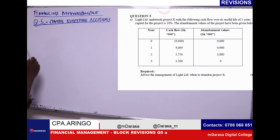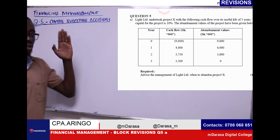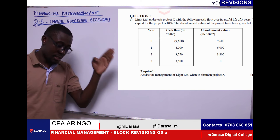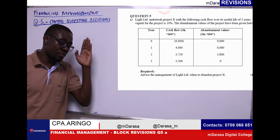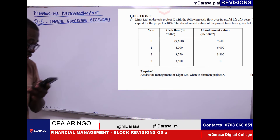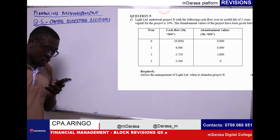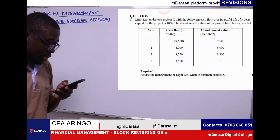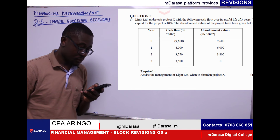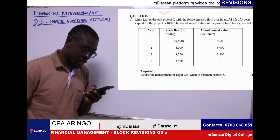In today's session, we are looking at question number five A, which is covering the concept of capital budgeting decisions. The examiner tells us that Light Limited undertook Project X with the following cash flows over its life of three years. The cost of capital for the project is 10%, and the abandonment values of the project have been given.